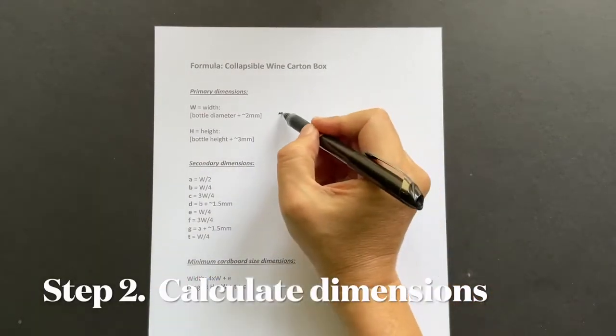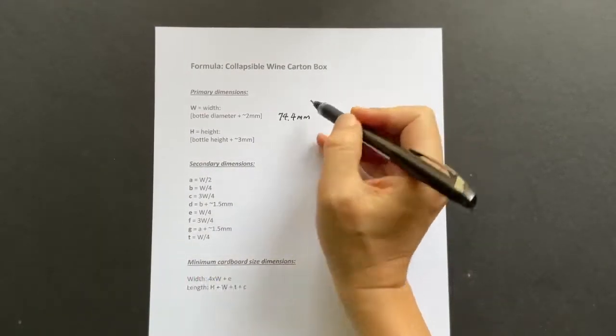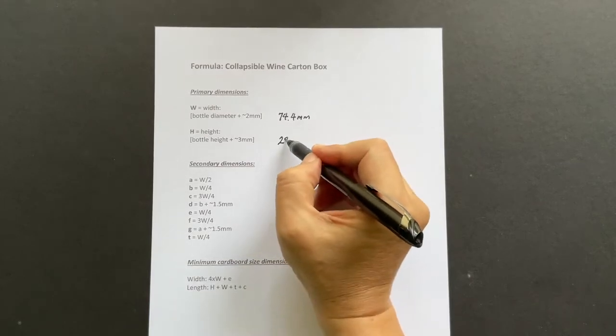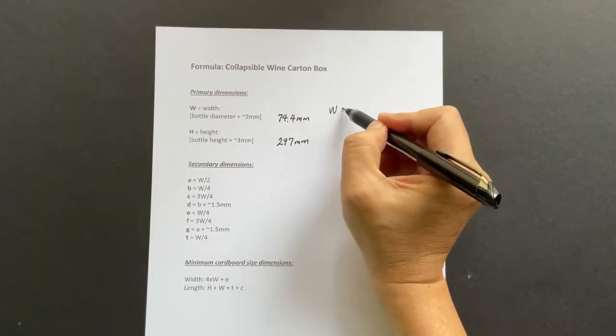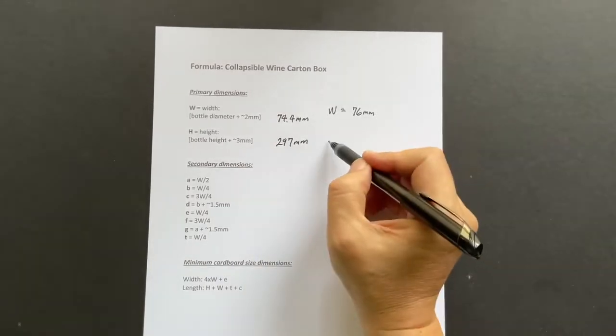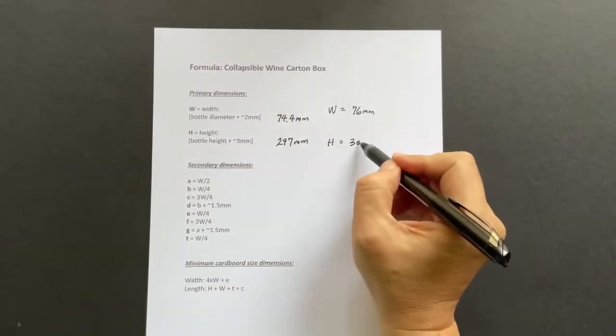Transfer the readings to the formula worksheet. Using the formula, I rounded off W to 76 millimeters and H to 300 millimeters.